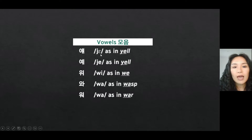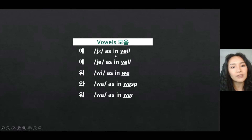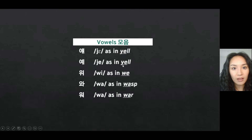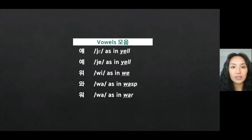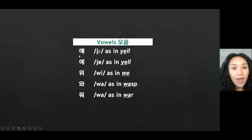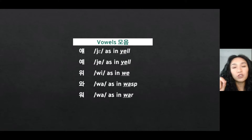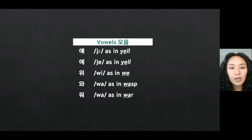Let's start with the first vowel: 예, as in 'yell.' The second vowel is also 예, as in 'yell.' By pronunciation, you can't distinguish between these two. If you look closely, it looks like 예 as a monophthong, as we learned before. If you just put one more shorter stroke there, it becomes a diphthong. They both go 예.